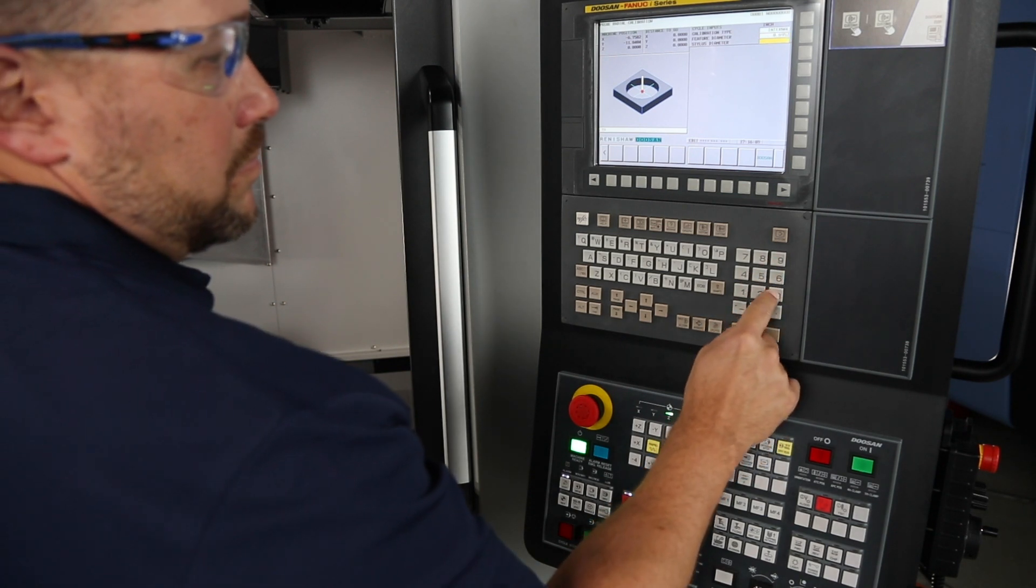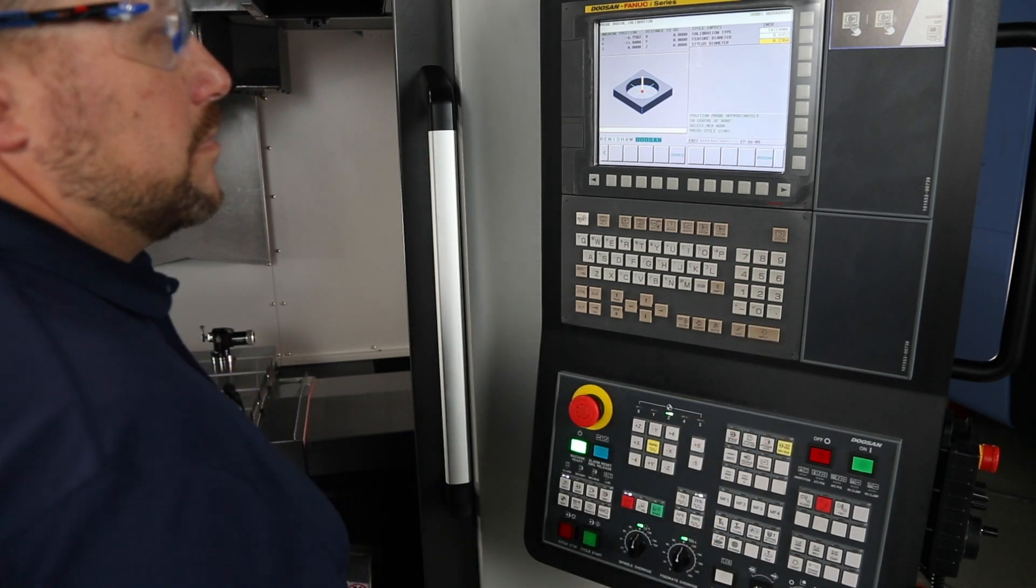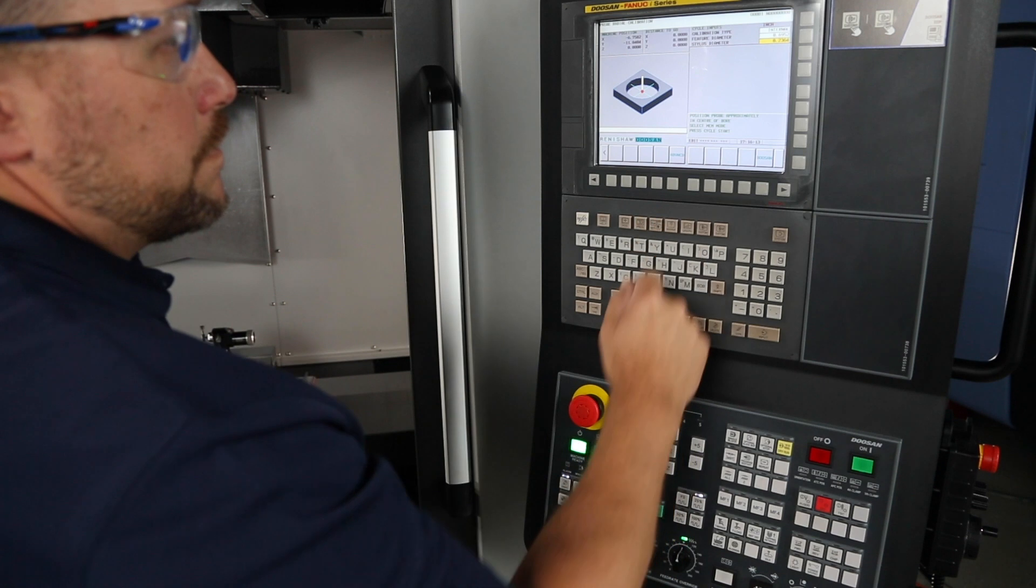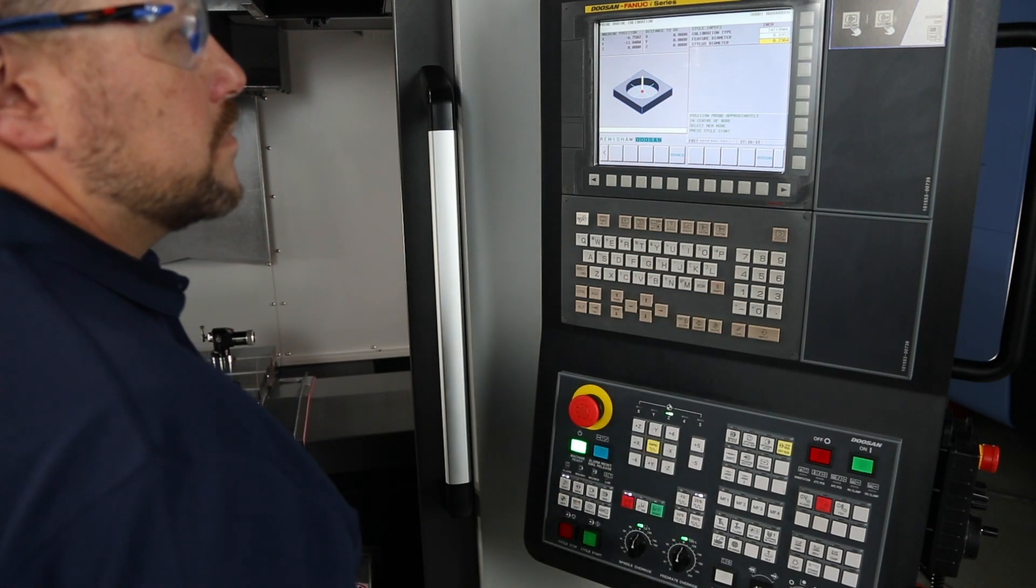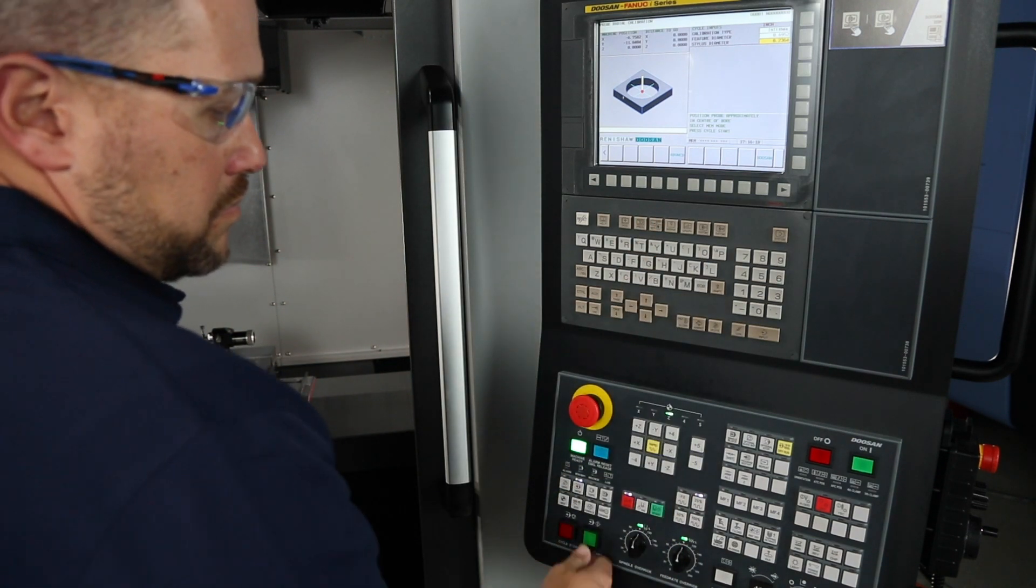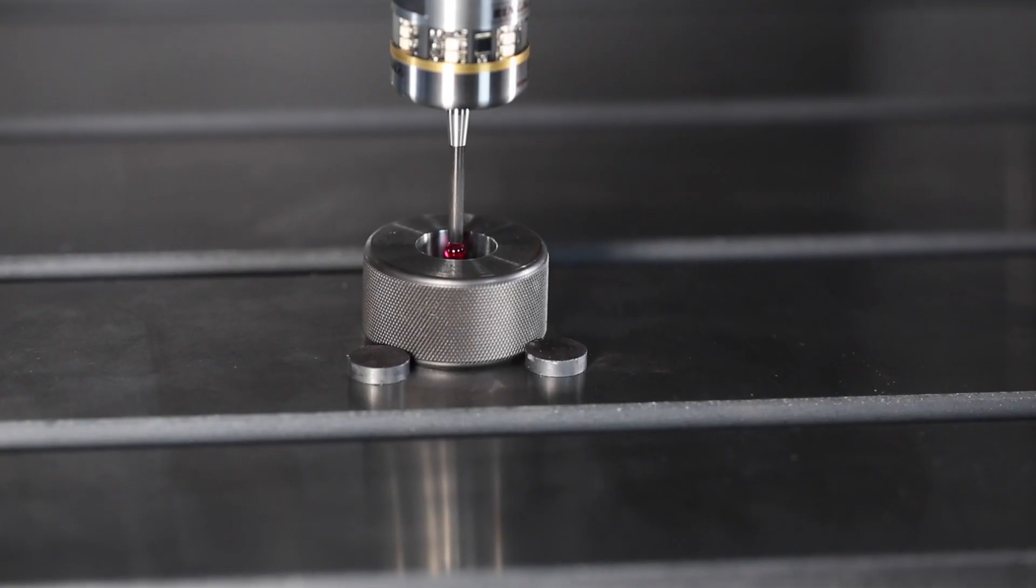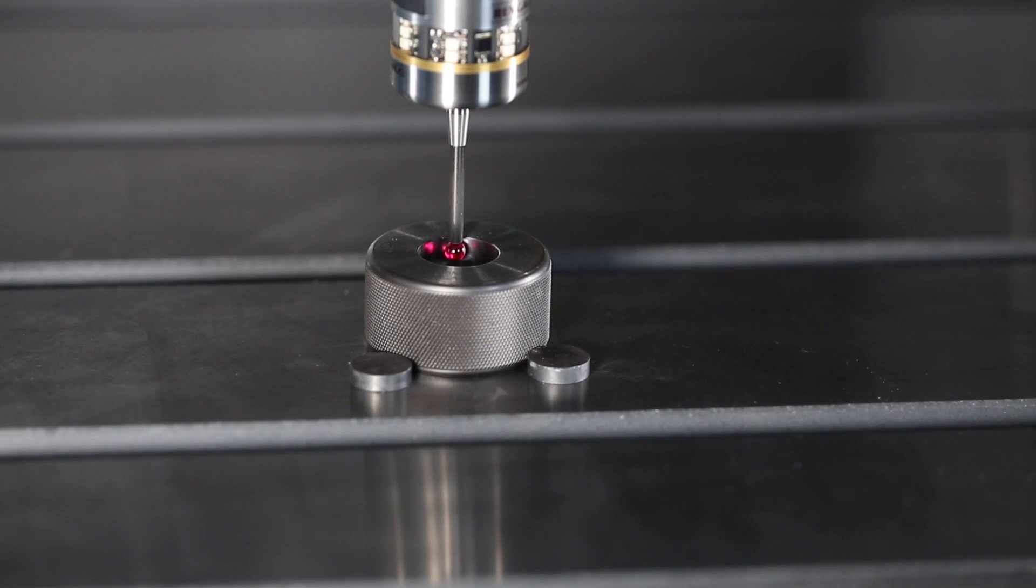At this point, your Doosan machine will show a message to move the probe close to the center of the ring gauge and put the machine in memory mode. I want you to follow these instructions. Press the memory key and put the machine into memory mode. Then I want you to press cycle start and the calibration sequence will automatically begin.